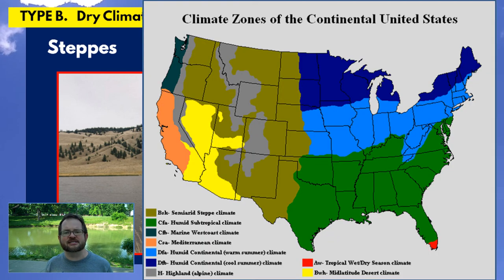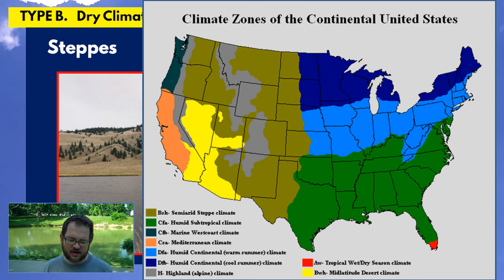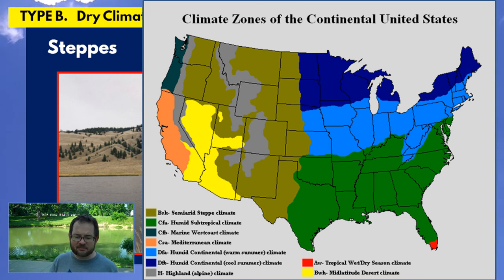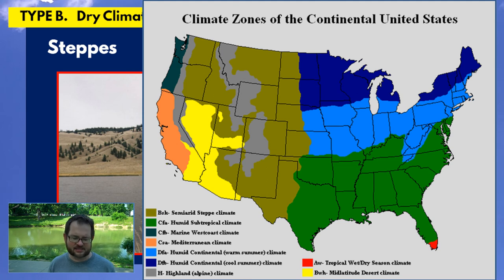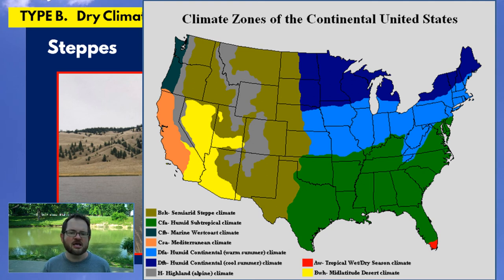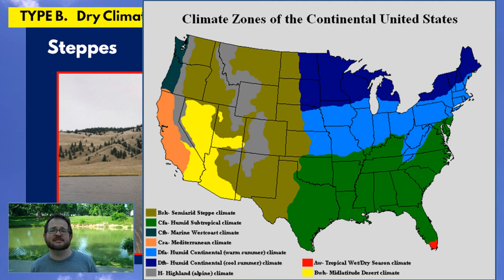Looking at the United States, type B climates are very dominant in the western US. Some of that is true desert, especially in Arizona and New Mexico, but most of the type B climates in the United States are actually steppe — West Texas, the Oklahoma Panhandle, Utah, much of Colorado and Wyoming, especially eastern Colorado and Wyoming.